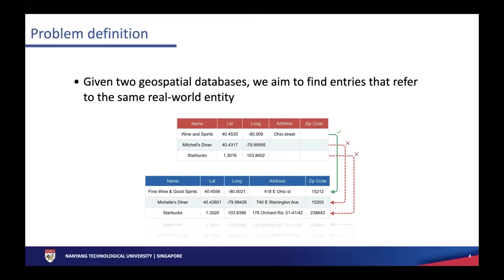We need each word to play a different role in the context. The last example shows two Starbucks POIs which have the same name and are very close in position, but they do not correspond to the same entity. This can only be inferred by looking at the neighborhood of the two POIs. These two POIs are located in the Orchard Road District, which is a very high-density district in Singapore. As we know, Starbucks is a very famous chain, so it's reasonable to have two POIs named Starbucks close by, rather than a unique POI with a unique name that is more likely to match.